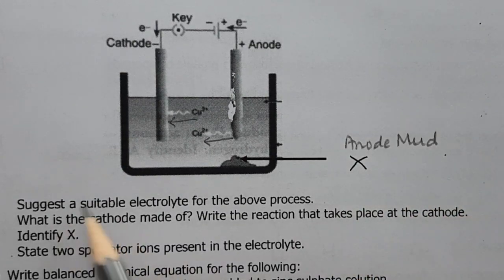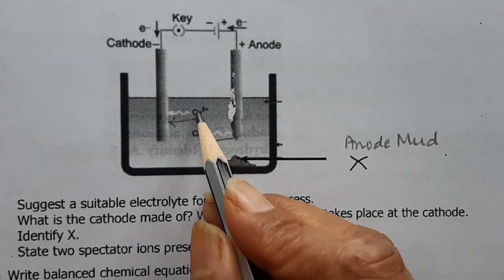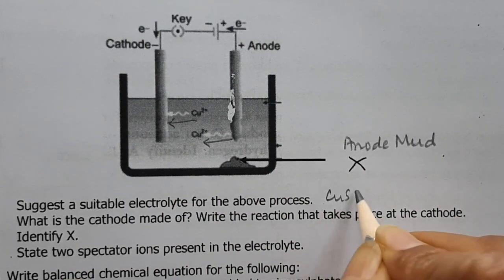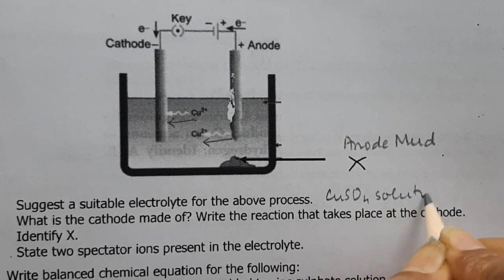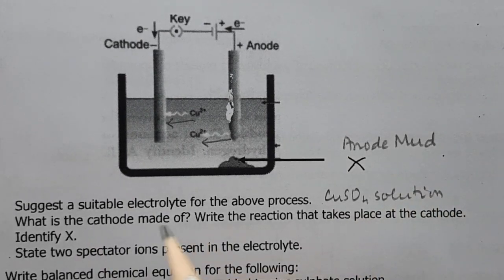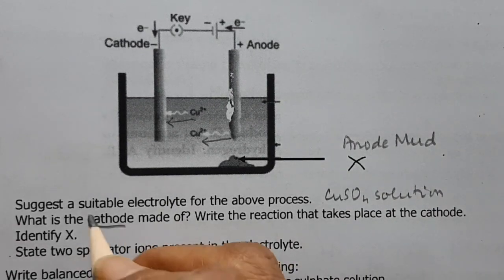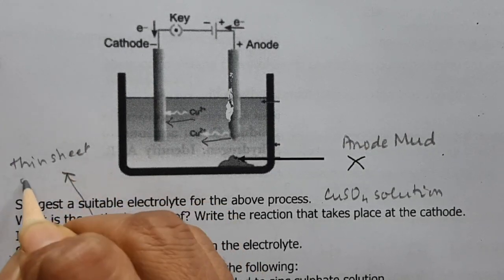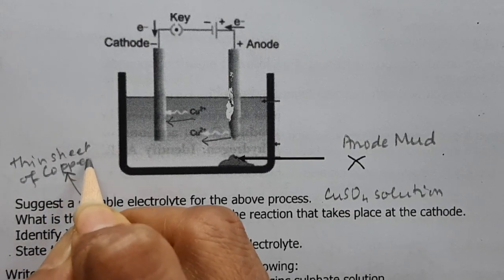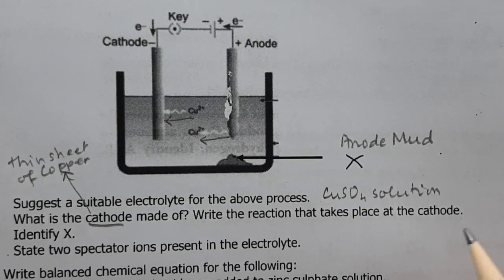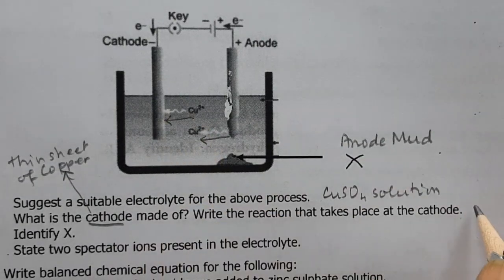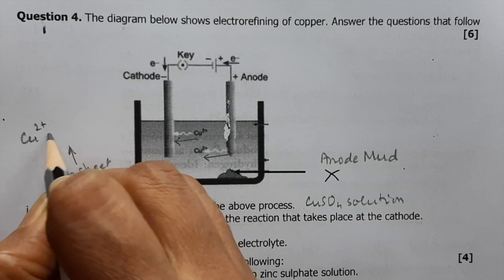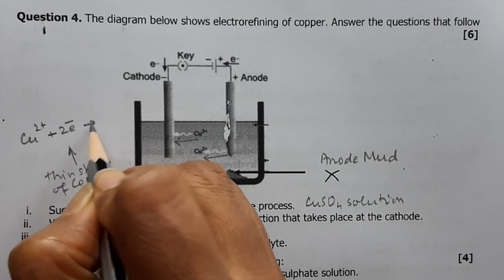Suggest a suitable electrolyte: aqueous copper sulfate solution. The cathode is made of a thin sheet of pure copper. The reaction at the cathode is: Cu²⁺ + 2e⁻ → Cu.